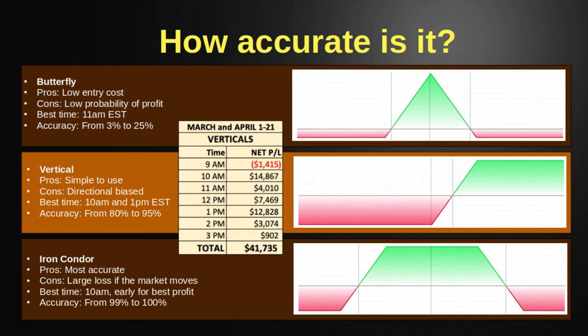Verticals — your put credit spreads and call credit spreads. Notice the timing: first thing in the morning is not good, actually negative, but right around 10 a.m. is when verticals really start to shine, and again at 1 p.m. A vertical is a directionally biased trade — you're assuming price is going up or down. The accuracy in this system has jumped dramatically, up from 80% to about 90–95% in the current version. I've added a lot of code for directional bias and price tracking and I'm actually pretty proud of that work.